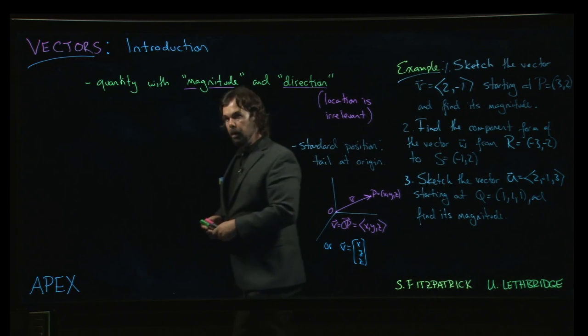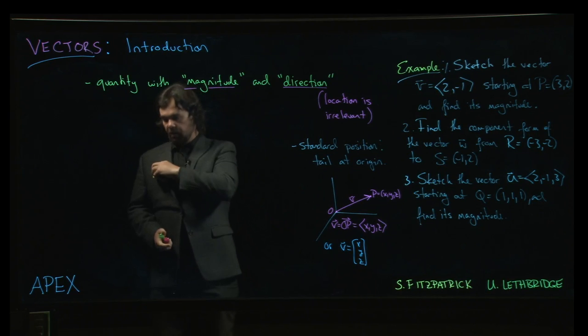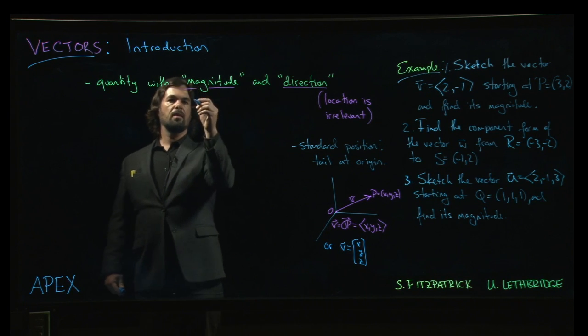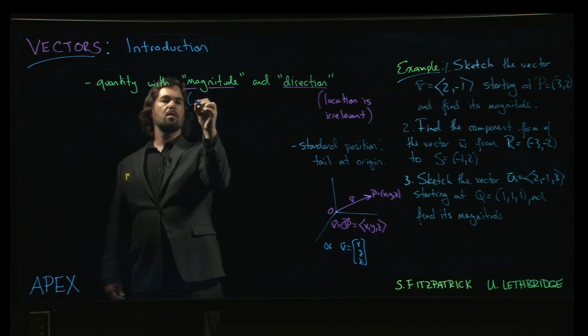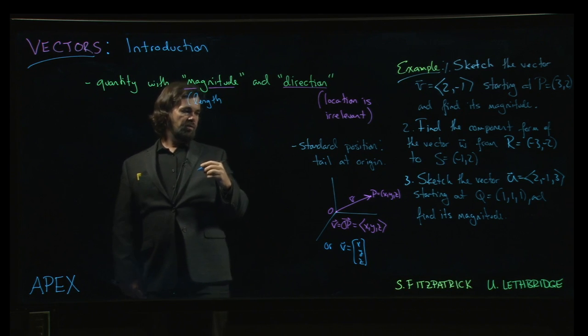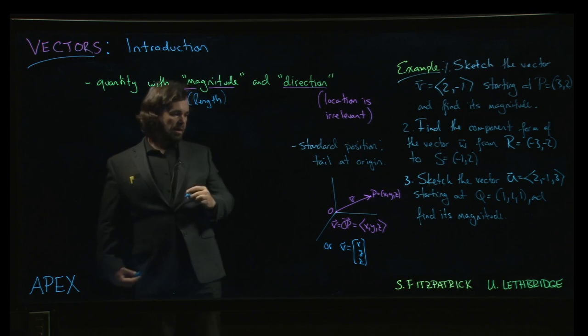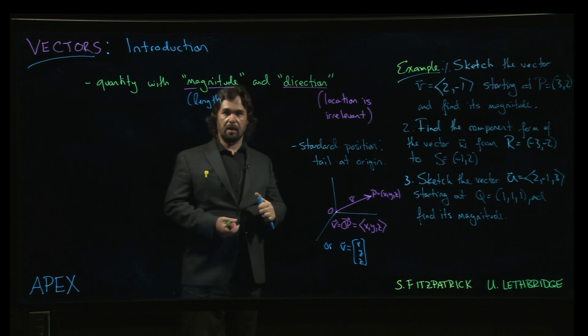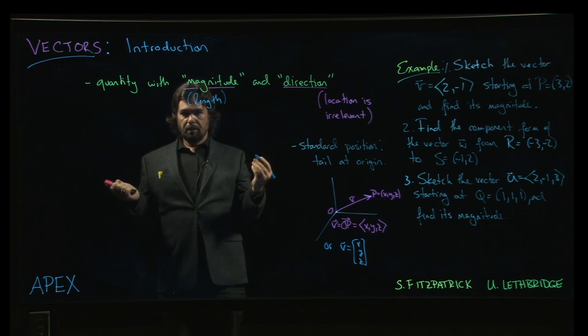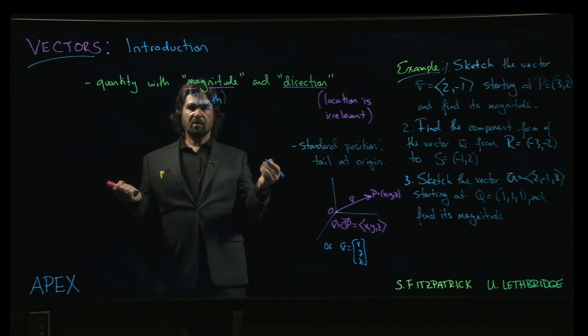So we're going to look at an example. One thing we didn't discuss in the introduction is, what do we really mean by magnitude? Well, magnitude just means length. It's really a distance. And so if we think about a vector, say, from a point P to a point Q, we know how to compute length. We use the distance formula.